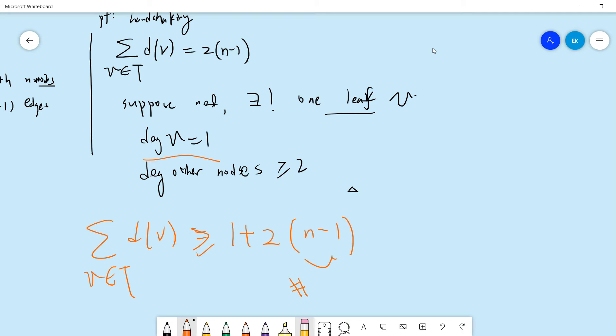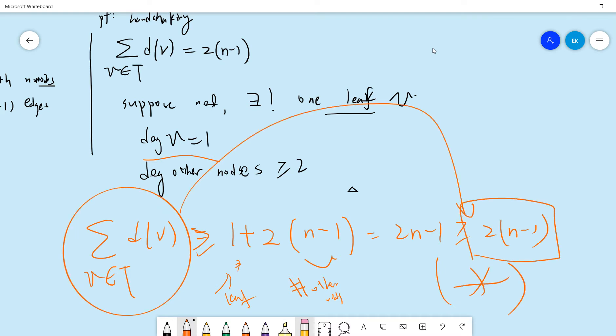Which is not same as this. So this is the leaf and other nodes, right? And so it's very simple that this is two n minus one, which is definitely larger than two n minus one. So this is a contradiction because the handshaking lemma tells that this quantity needs to be same as this, but now it's larger.